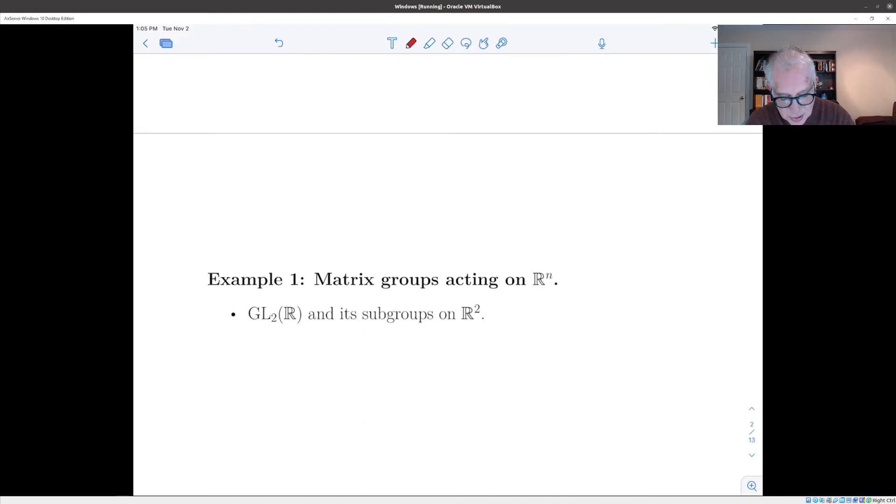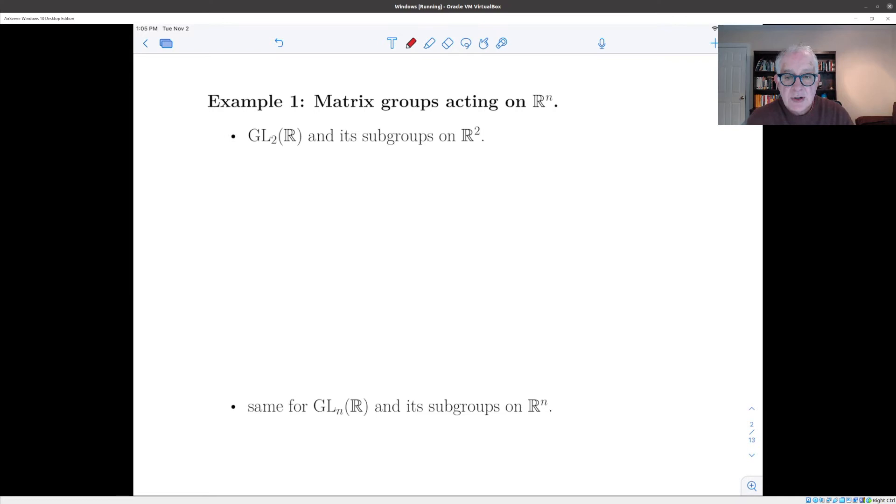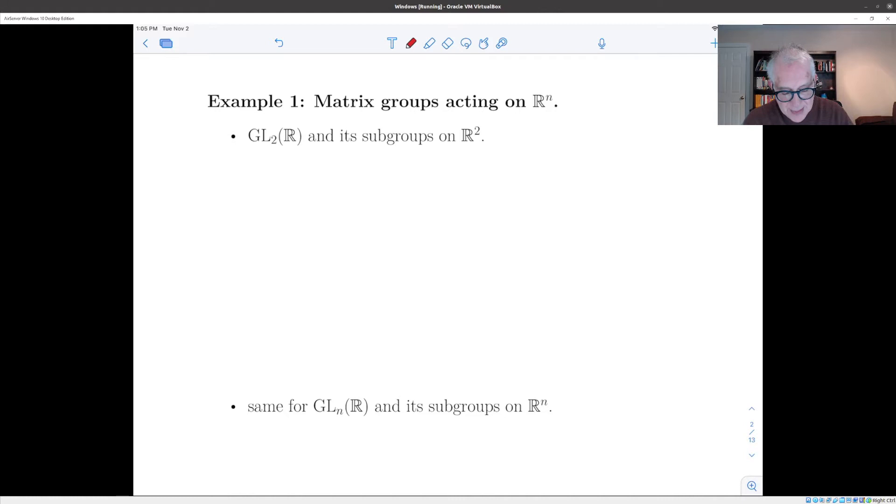Now we have already seen many examples of this. So let's just look back and see some of the things that we've already worked with which are actually group actions. So one example is that matrices act on vectors. And for example, if you take a two by two matrix in GL_2(R) and a vector (x_0, x_1) in R^2 and you define gx to be just matrix multiplication, so g is (a, b, c, d) and you define this to just be multiply the matrix times the vector.